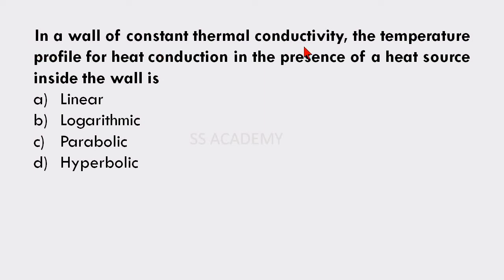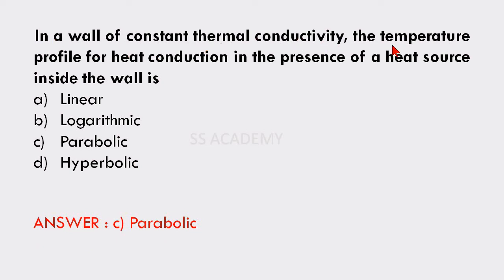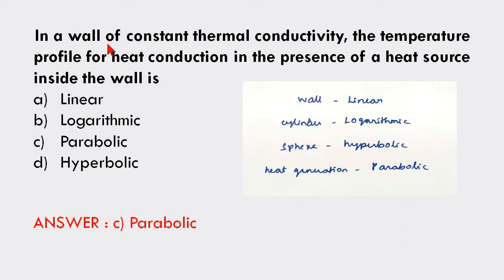Next question: In a wall of constant thermal conductivity, the temperature profile for heat conduction in the presence of a heat source inside the wall is — linear, logarithmic, parabolic, or hyperbolic? The answer is parabolic. Even though a wall is mentioned, the presence of a heat source means the temperature profile is parabolic, not linear. For heat generation, the temperature profile is always parabolic.